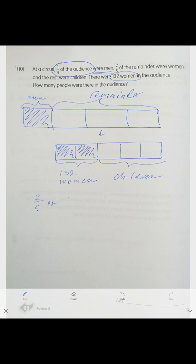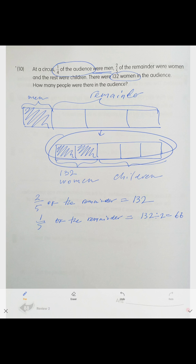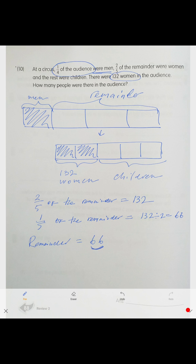Two-fifths of the remainder equals 132 women. So one-fifth of the remainder is 132 divided by 2, which is 66. The full remainder is 66 times 5, which is 330. So there were 330 women and children together in the audience.